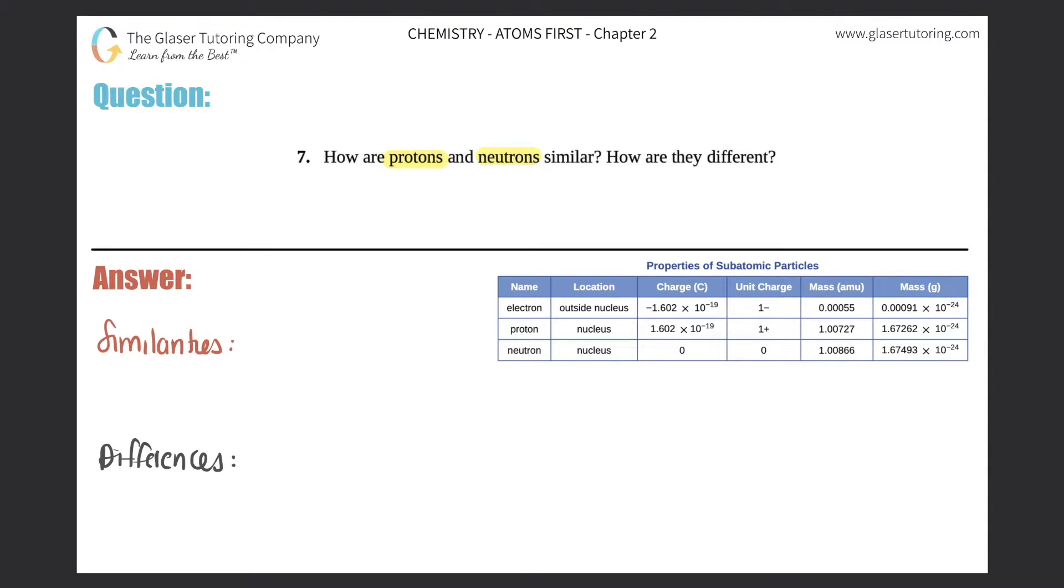We're looking at protons and neutrons, and I gave you a nice chart that's found in your textbook that says properties of subatomic particles. Protons are here and neutrons are here. If you're asking where the electrons go, back to number six we did protons versus electrons in that one.